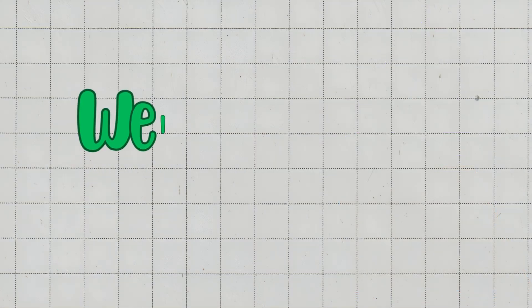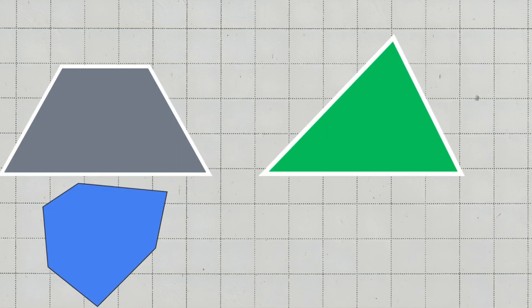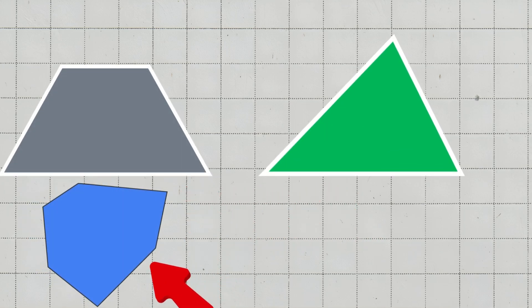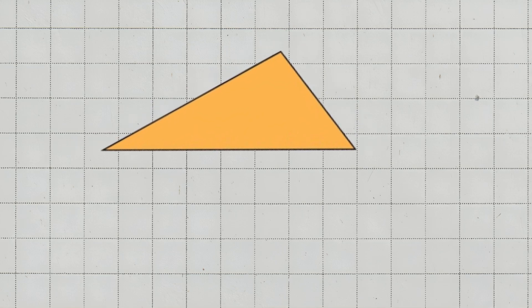Welcome back to Mathics Lab. In Perimeter Part 2, we explored different ways to calculate the perimeter of shapes. But there's more to learn. In this video, Perimeter Part 3, we're diving even deeper, solving more examples and tackling irregular shapes. Look at this shape.